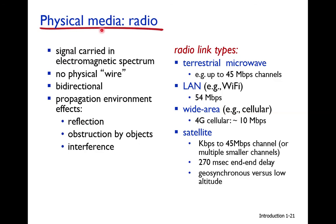Due to reflection, obstruction, and interference, the error rate in wireless is much higher compared to wired media such as twisted pair, coaxial, or fiber optics. Therefore the quality of wireless medium is lower. However, wireless is preferred because it offers mobility — you can remain connected to the internet while moving, whereas with wired you must stay at a fixed location.